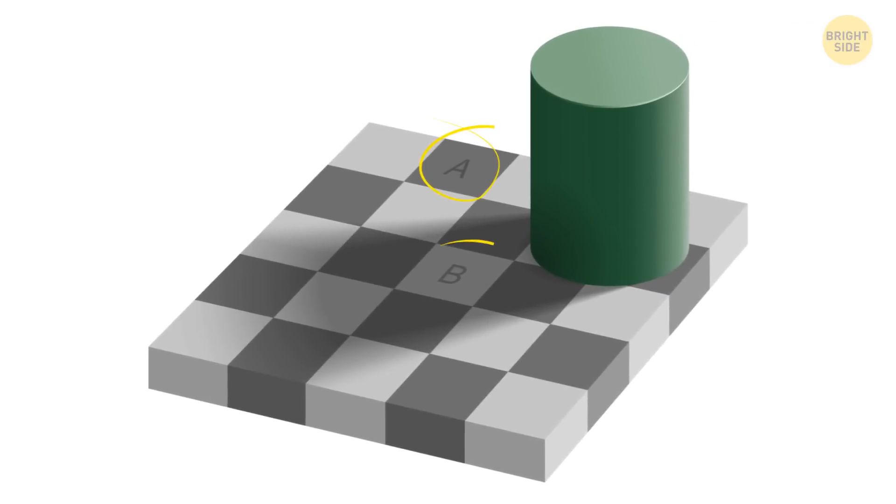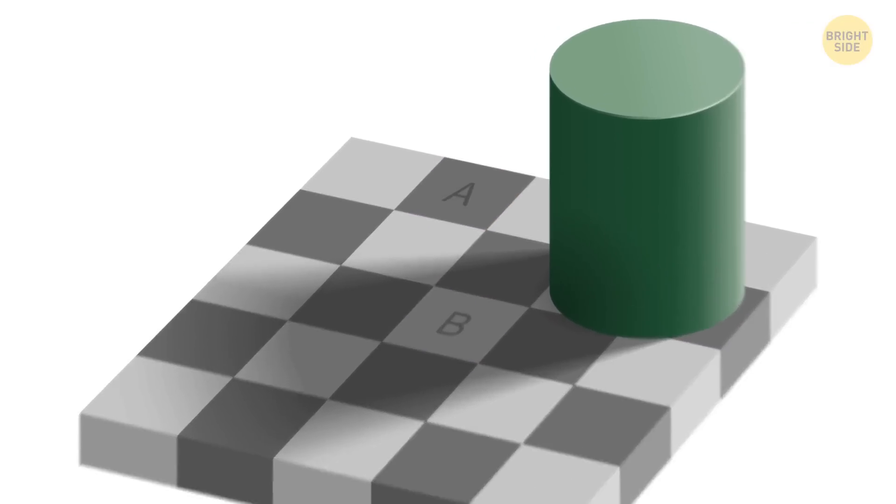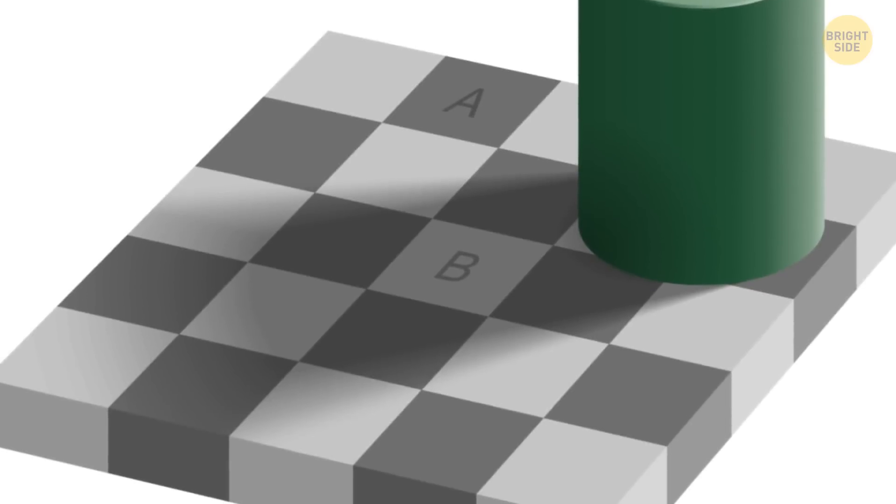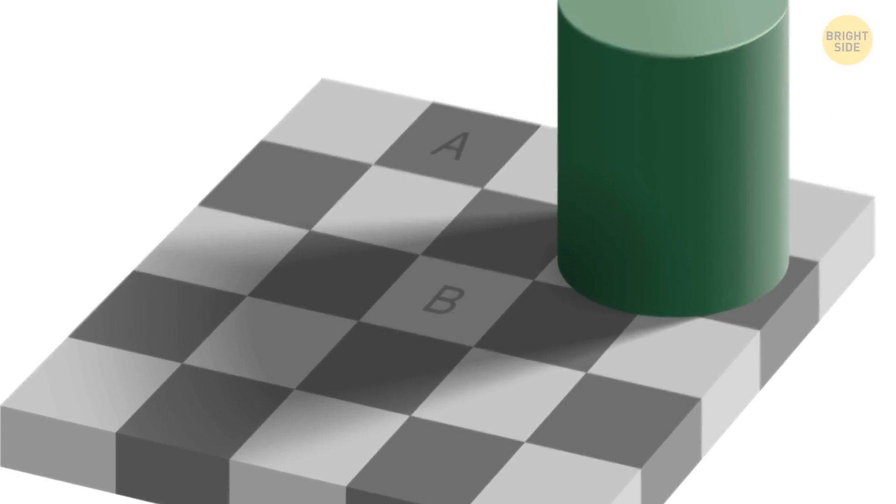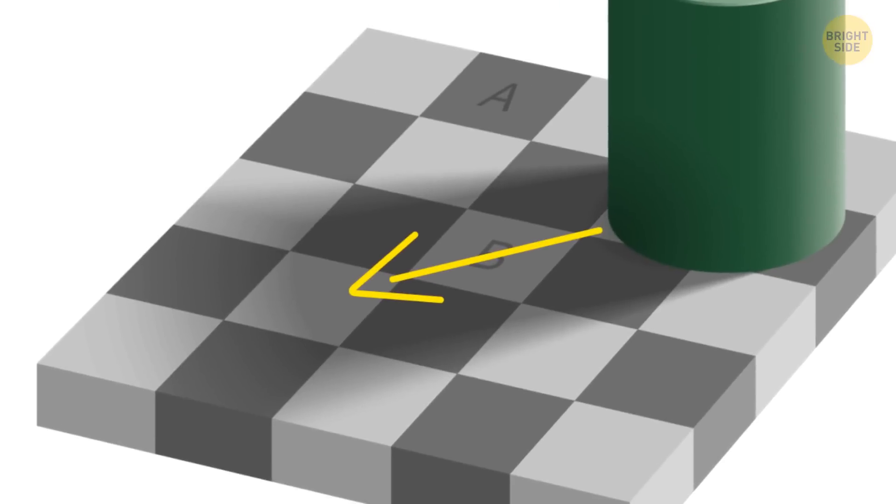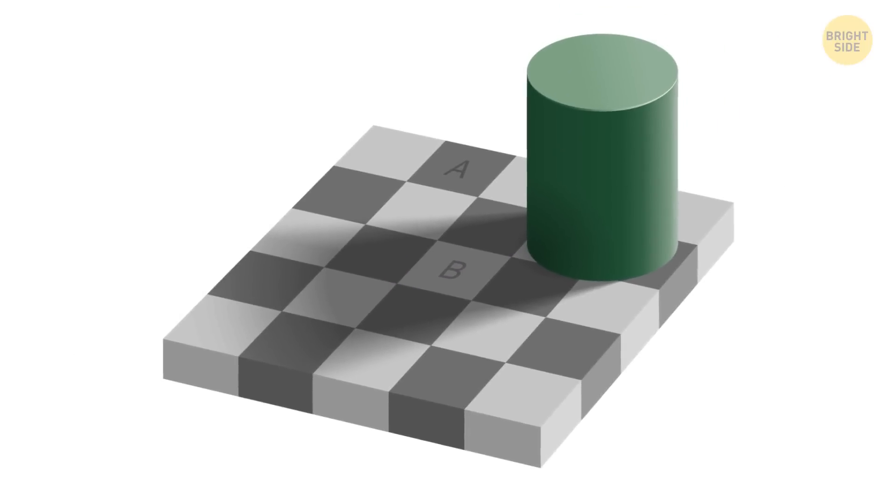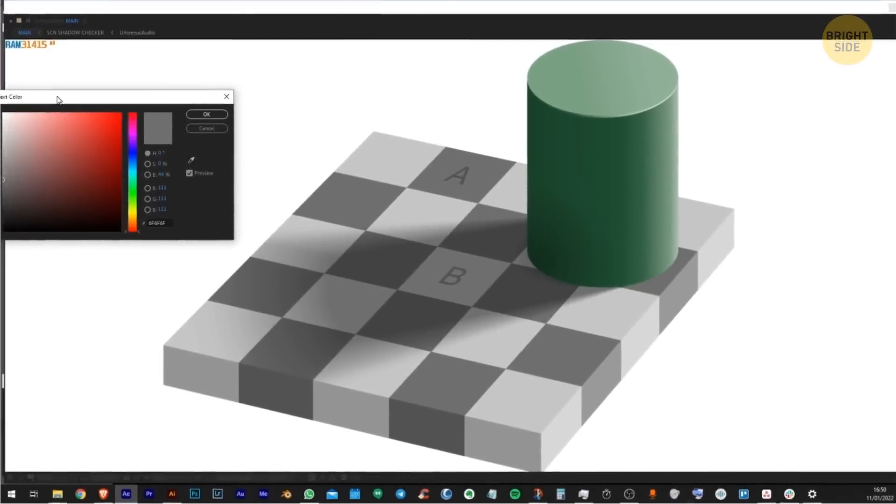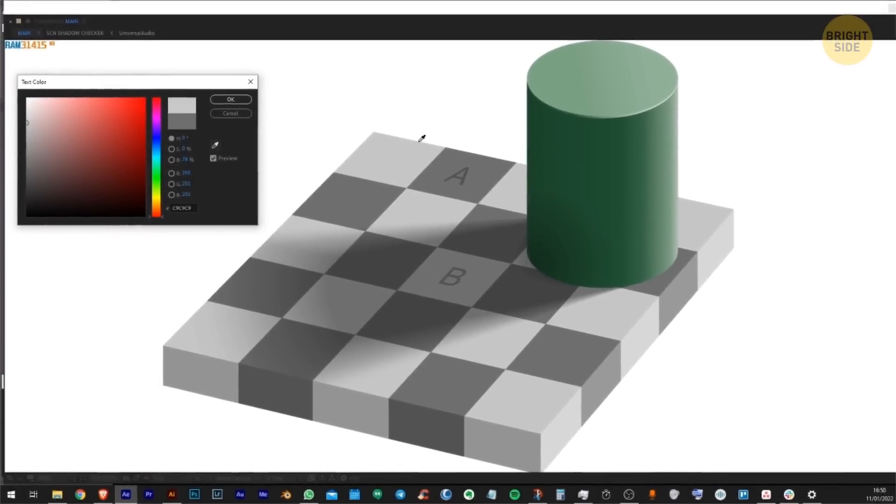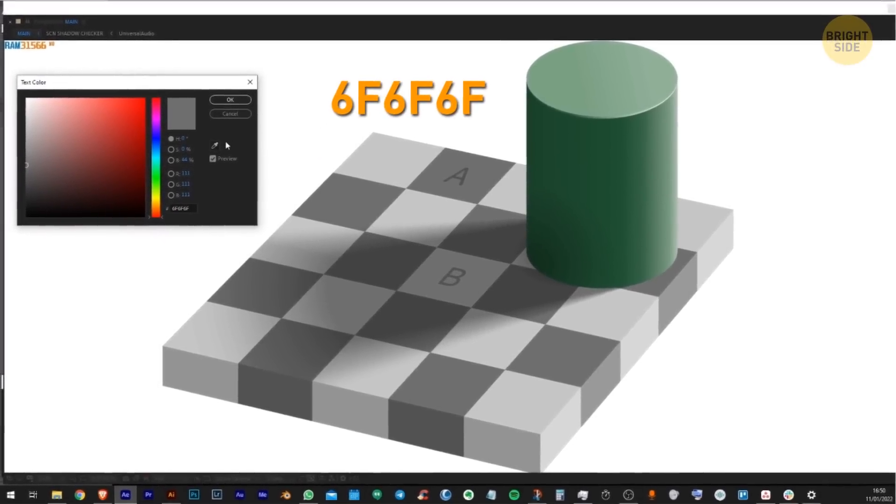When you compare squares A and B in the checker shadow illusion, you can tell square A is much darker than square B. Your brain expects the cylinder to throw a shadow on the board. It compensates for the alternating colors it expected to find. If you still don't believe the squares are of the same color, you can compare them with a color selector in any photo editing program.